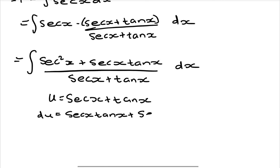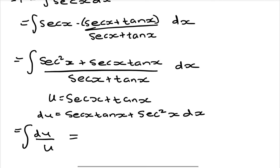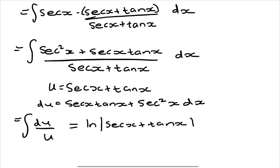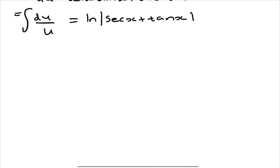The derivative of tan(x) is sec²(x) dx. So looking closely, the numerator part is du and the denominator part is u, so it becomes du over u. The solution of this is ln|u|, where u is sec(x) plus tan(x). That finishes the first part of our integral, I1 equals ln|sec(x) + tan(x)|.